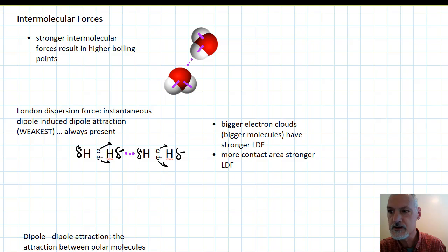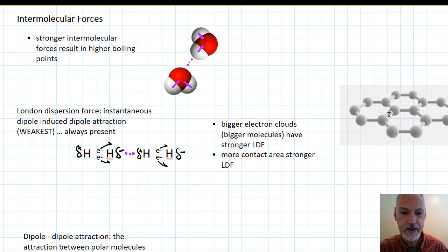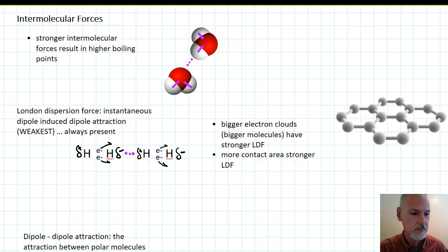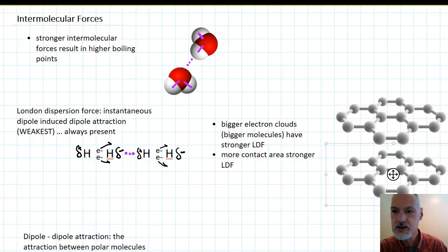A second situation which enhances the London dispersion force has to do with the surface area of the molecule. You might recall graphene from an earlier program. If we have large sheets of graphene, we can also have large surface areas between them, and this also enhances our London dispersion force. So that's the weakest of our interactions and is present in all molecules.